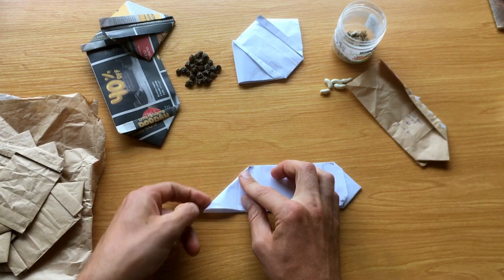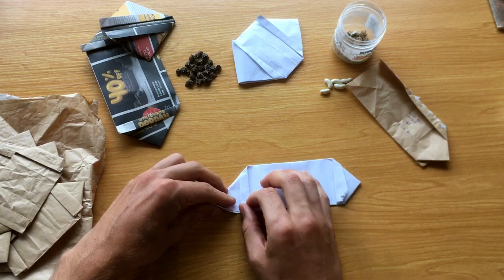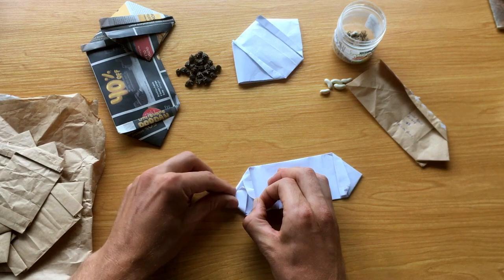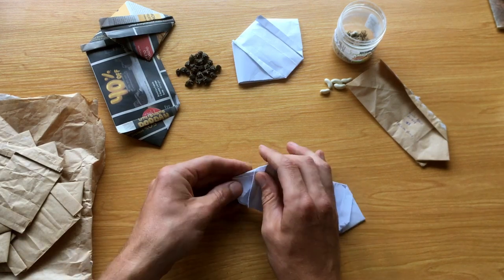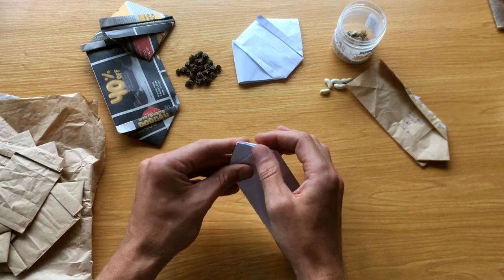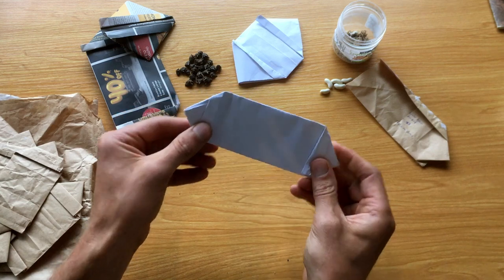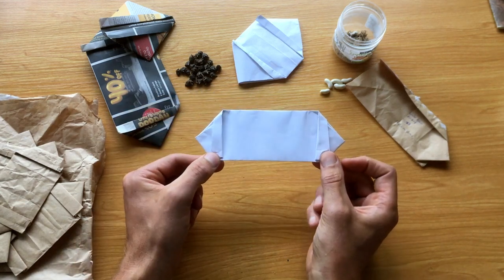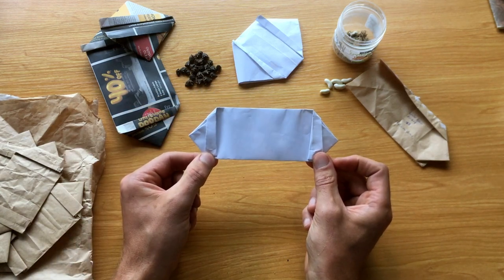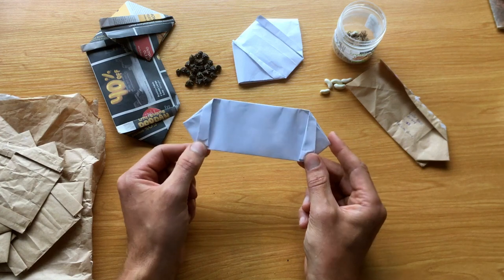And then you take the bottom corner and then you kind of fold it in there in the bottom. So depending on the shape of the paper that you start with you'll get a different shape. So this is a long one.